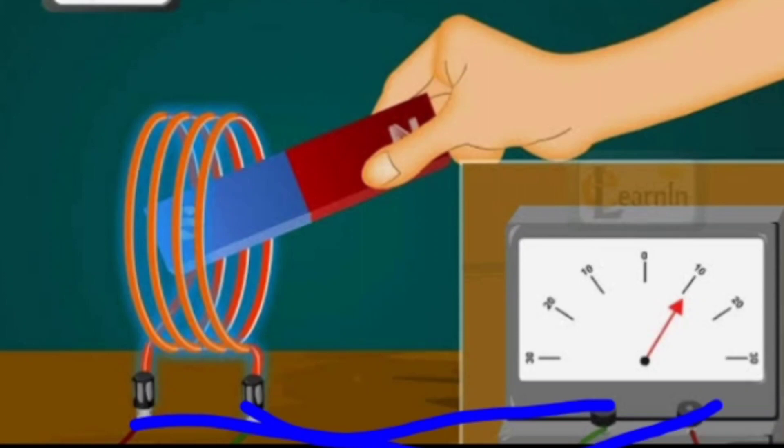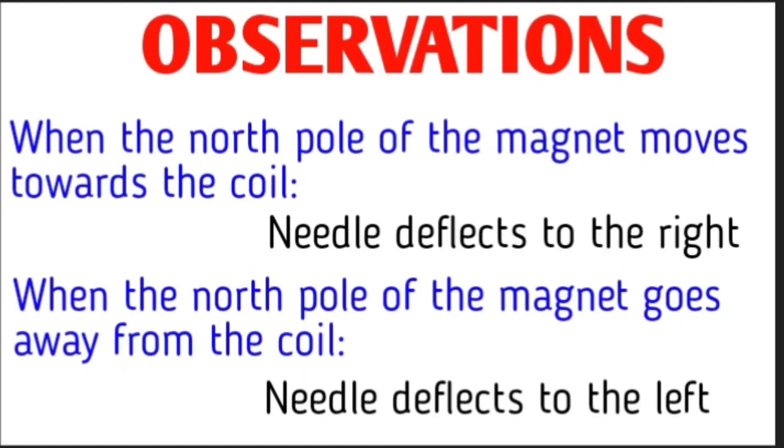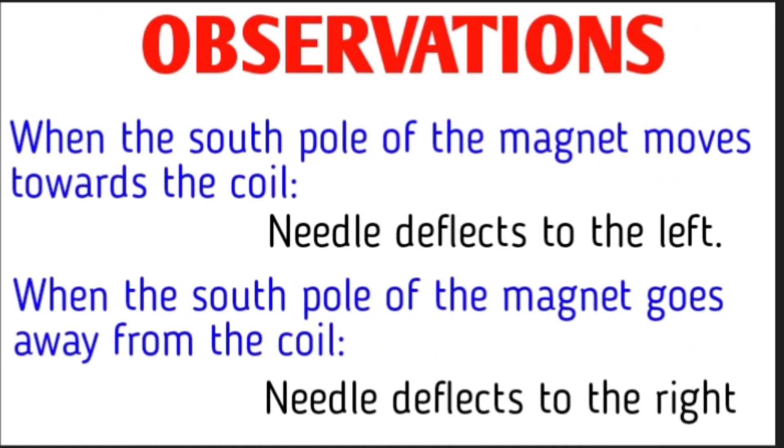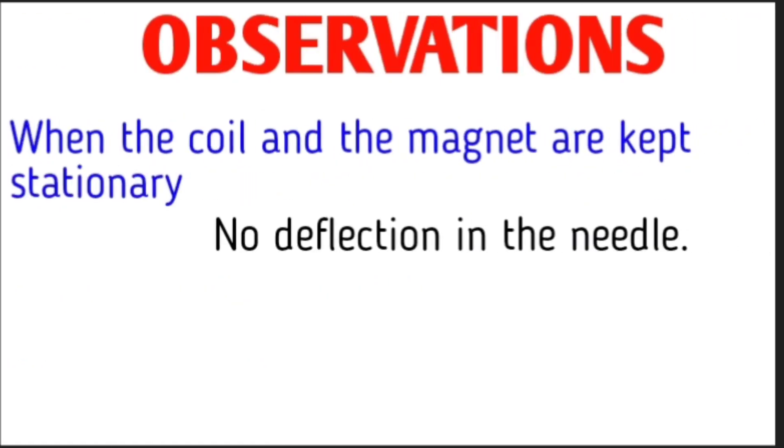Let us note down the observations. This is important. You can see the diagram. When the north pole of the magnet moves towards the coil, needle deflects to the right. When the north pole goes away from the coil, the needle deflects to the left. It is just reversed when you are doing with the south pole. When the south pole moves towards the coil, needle deflects to the left. When the south pole goes away, needle deflects to the right. When the coil and the magnet are kept stationary, no deflection in the needle.